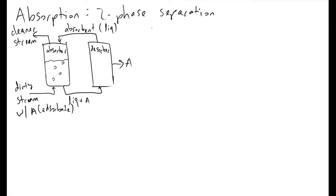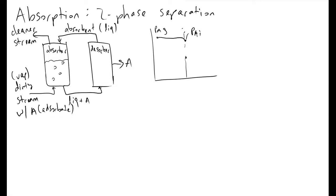What happens in our absorber is this dirty stream will be some kind of vapor. We will bubble the vapor through our liquid absorbent, and as these bubbles interface with the liquid, they will have concentration profiles that will look like this. They will have some kind of bulk concentration referred to as PAG, and because there is a little bit of mass transfer resistance, it dips slightly before the interface. At the interface, we will have some partial pressure PAI, and at the liquid side, we will have some interfacial composition CAI as well as a bulk concentration CA bulk. I will define this axis to be Z, and for the sake of simplicity, I will be neglecting curvature in this example.